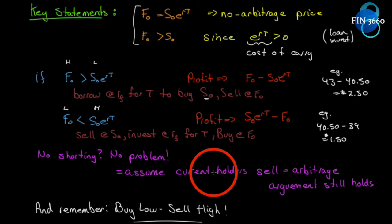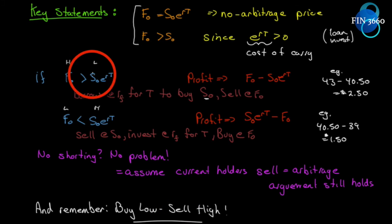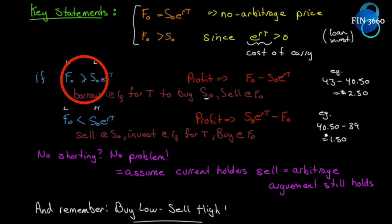There are large funds and investment banks holding those investment assets, so they serve as sellers — we don't necessarily need short sellers if we already have long positions that can sell. Going forward, just remember: buy low, sell high. If the futures price is above the spot price, you'll know exactly what to do. It's that easy. Let's move on.